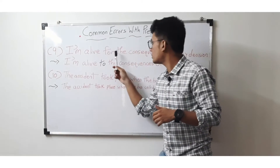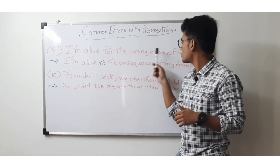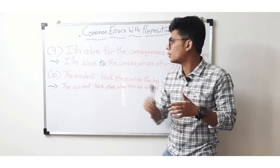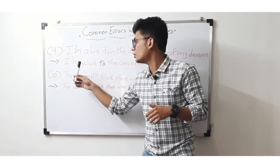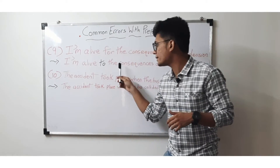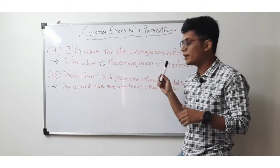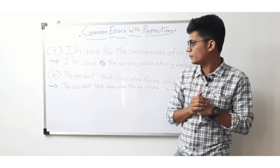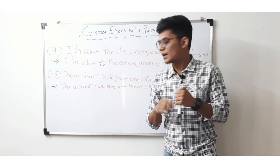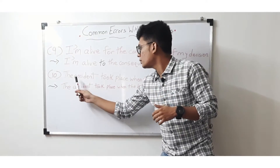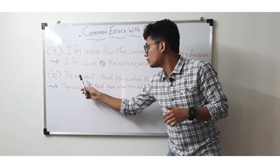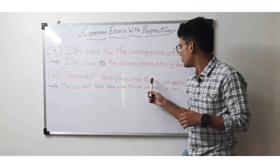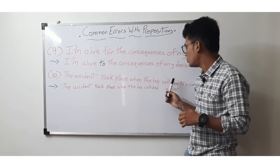Ninth sentence: 'I am alive for the consequences of my decision.' That is wrong. The correct sentence will be: 'I am alive to the consequences of my decision.' — 'to' is the correct preposition in this sentence.